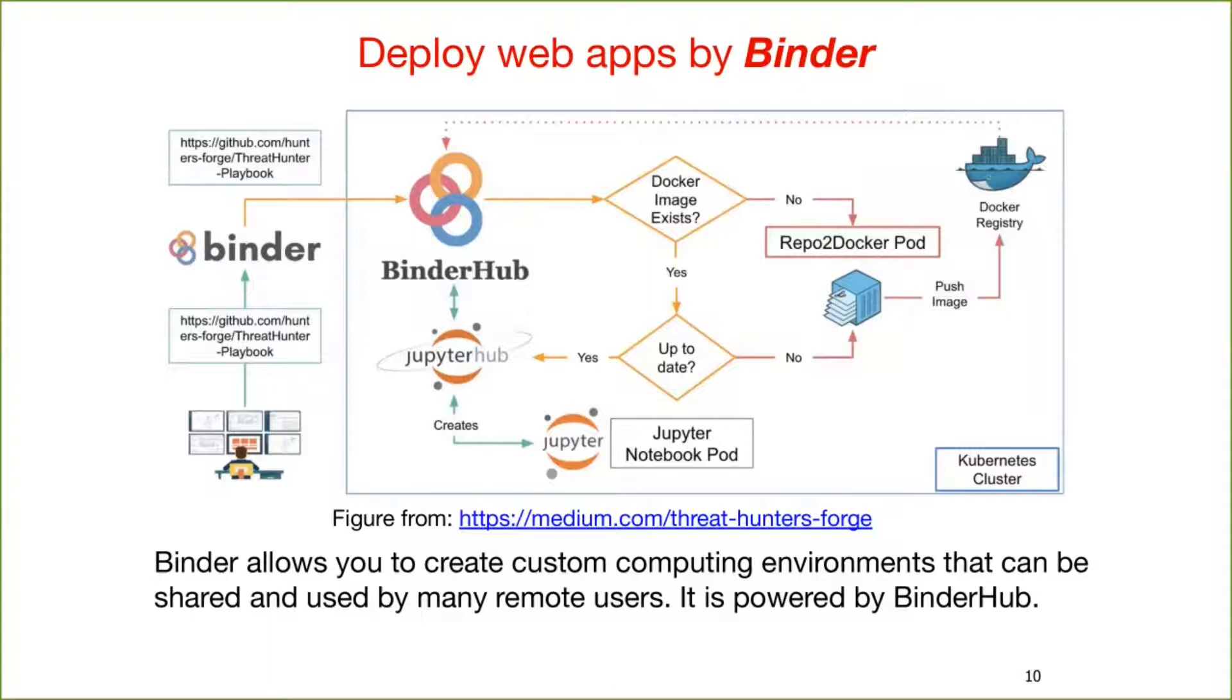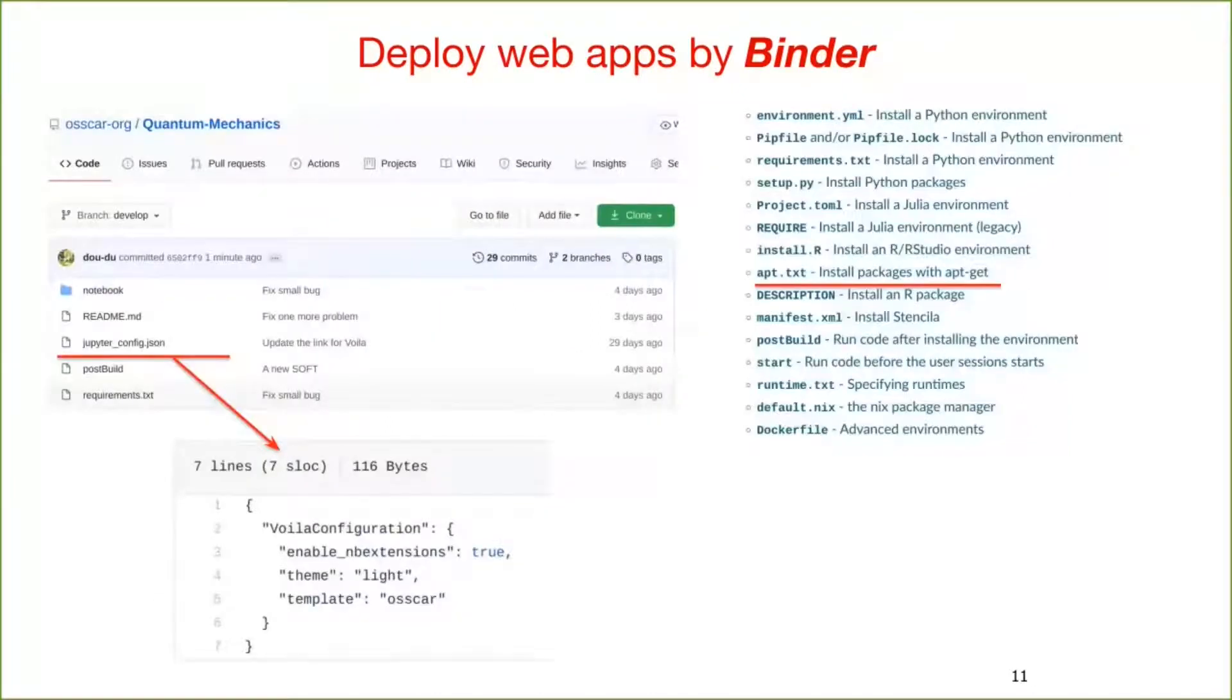So, it is usually very slow to run the binder for the first time after a new commit in the Git repository. Practically, we use myBinder.org as the BinderHub, which is free to use. The first step is to create a public Git repository at GitHub. Here is an example for quantum mechanics course materials. On the left is a Git repository at GitHub. Normally, we need to use the requirements.txt to install Python packages by pip. We also need to use the postBuild to enable the widgets in Jupyter Lab. The jupyter underscore config.json file is the configuration file for Voila. Here you can see that we use the OSCAR template.